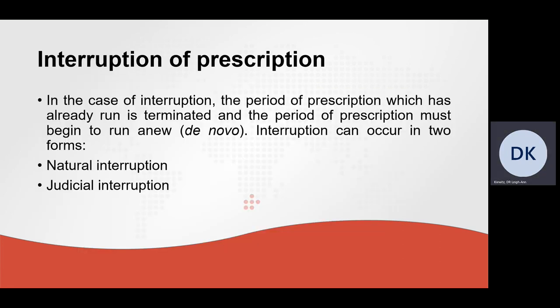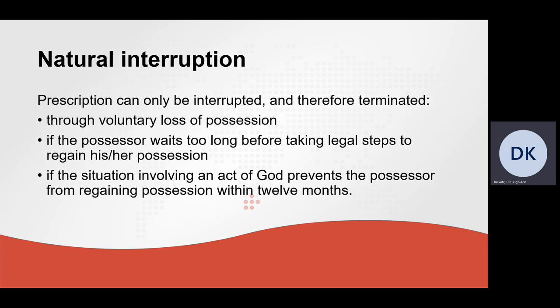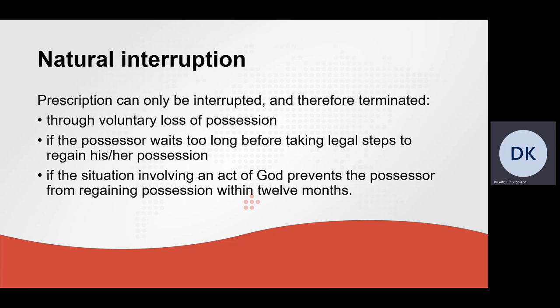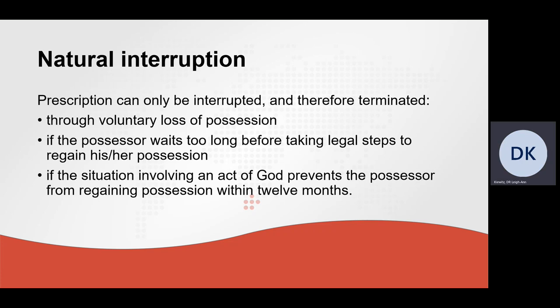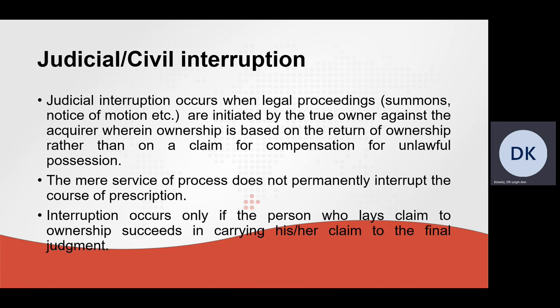Prescription can be interrupted. In the case of interruption, the period of prescription which has already run is terminated and the period of prescription must begin to run anew. An interruption can occur in two forms: natural interruption or judicial interruption. Natural interruption is where prescription has been terminated as a result of voluntary loss of possession, if the possessor waits too long before taking legal steps to regain possession, or if a situation involving an act of God prevents the possessor from regaining possession within 12 months. Judicial interruption is when legal proceedings are initiated by the true owner against the acquirer, wherein ownership is claimed for the return of the thing rather than compensation for unlawful possession.